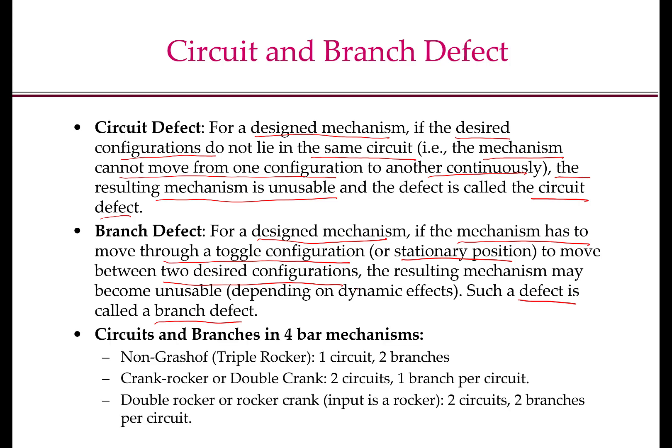So during a branch defect, your transmission angle may become zero. For four-bar mechanisms, all possible circuits and branches have been characterized: for a triple-rocker mechanism, there can be one circuit and two branches; for a crank-rocker or double-crank mechanism, there can be two circuits and one branch per circuit; for a double-rocker or rocker-crank mechanism, there can be two circuits and two branches per circuit.